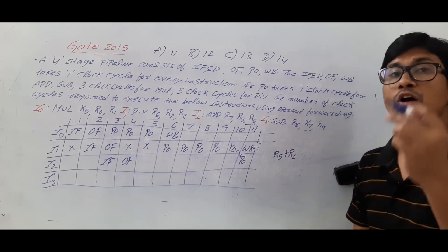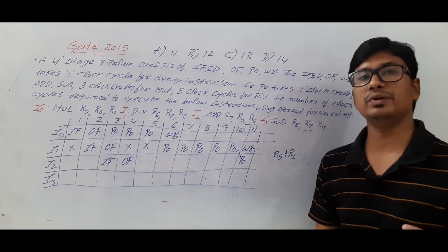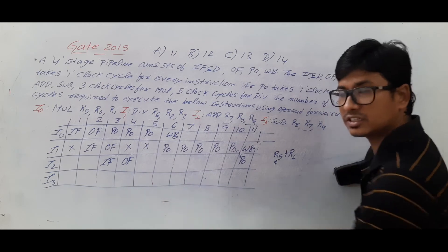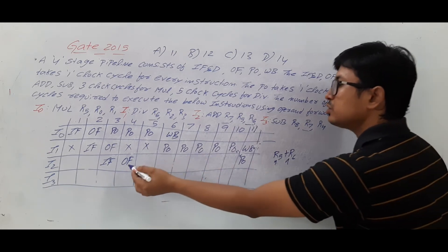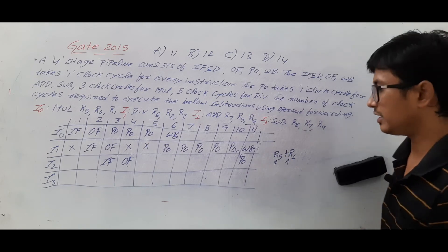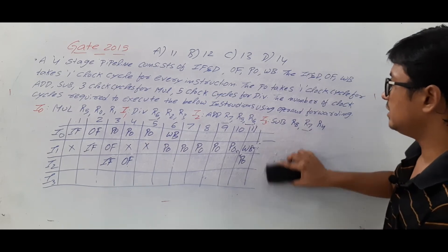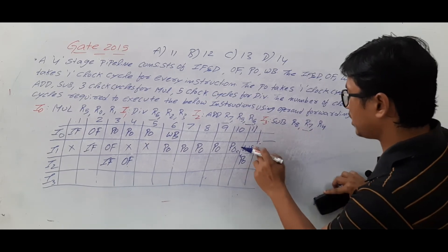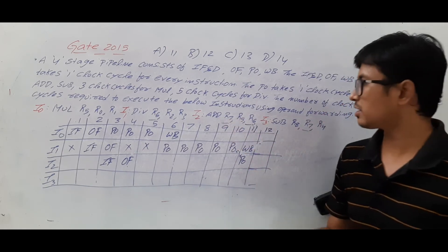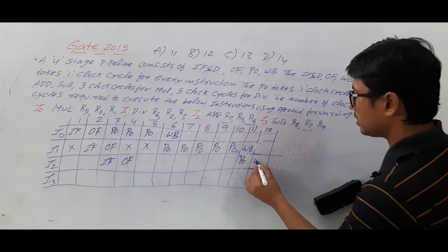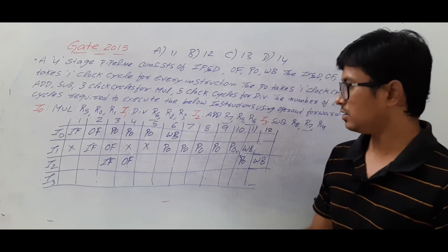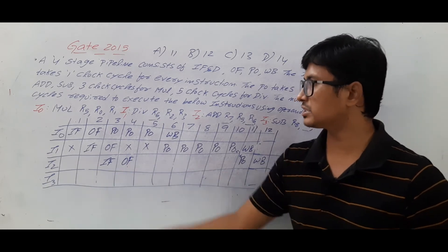That is what we call operand forwarding — you are forwarding the operand. The r5 value was already fetched and the r6 value is forwarded from I1's execution stage. The addition for I2 requires only one clock cycle, followed by one clock cycle for write back. The cycles before the addition are stall cycles since I2 is waiting for I1's operand forwarding.